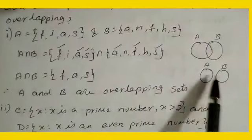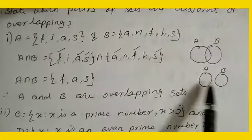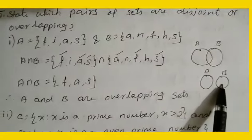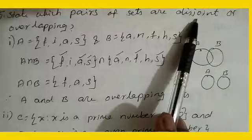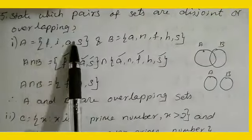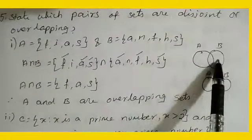Suppose we are taking A and B, two sets. In between there is no common element, it is called a disjoint set. And then overlapping means some common element is there.